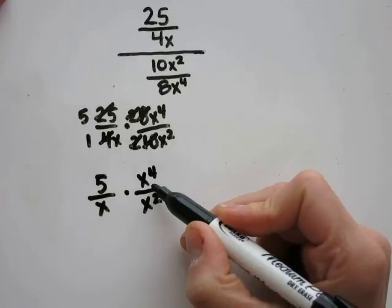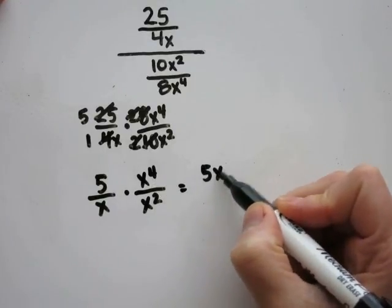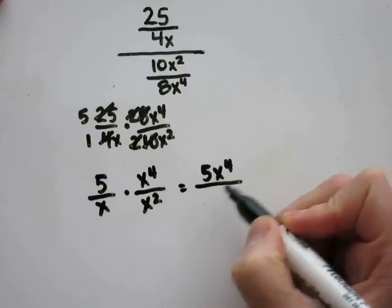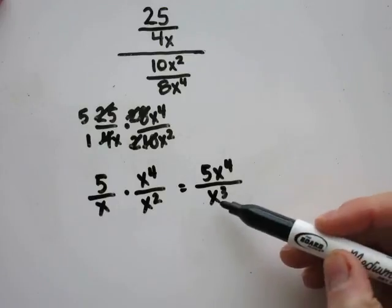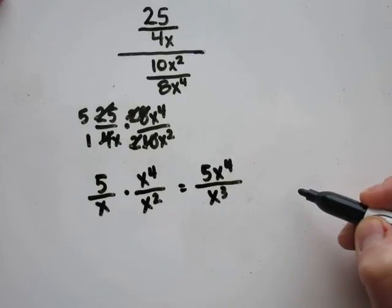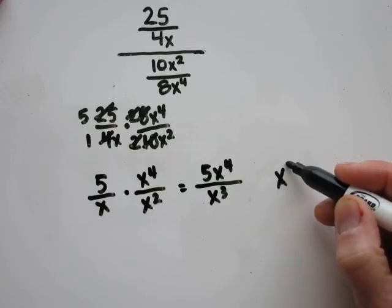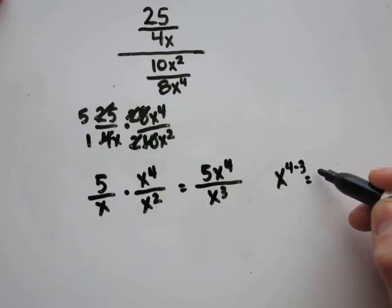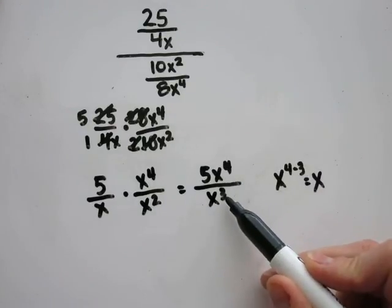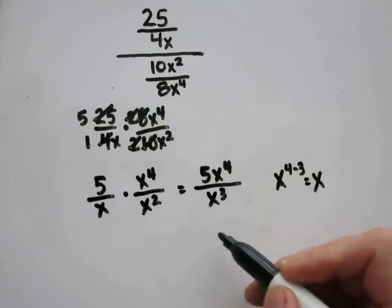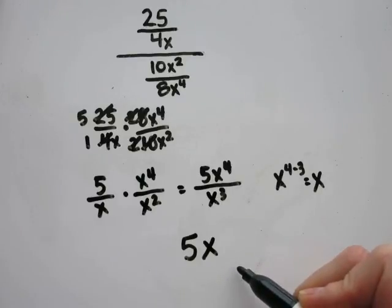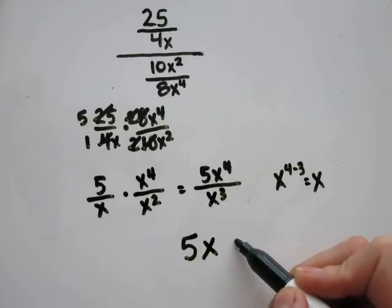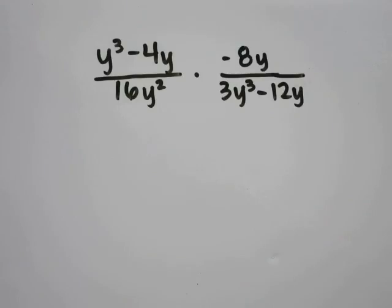5 times x to the fourth power is 5x to the fourth power over x times x squared, which becomes x cubed. I have the same base of x, so I'm going to divide them by subtracting the exponents. 4 minus 3 is 1, so x to the fourth power divided by x cubed becomes x. Keep the 5, so you're left with 5x, which is the same as letter E.